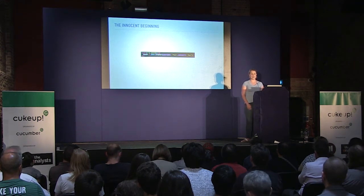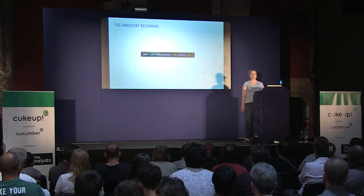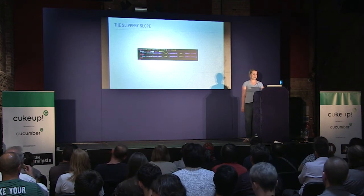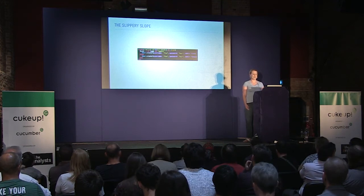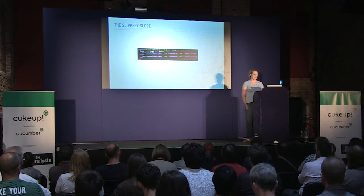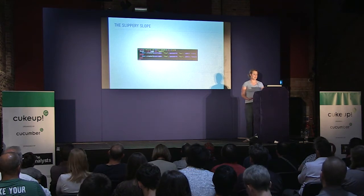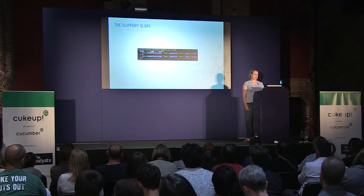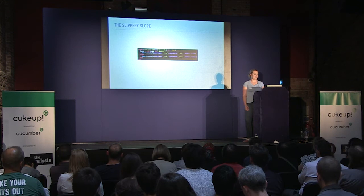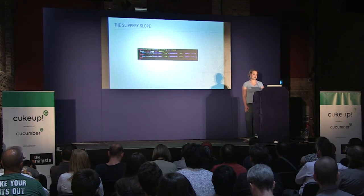I also want to address the issue of repetition in step definitions and how we can address that, especially since the functionality of calling steps from other step definitions is going to be deprecated in future versions of Cucumber. So the first scenario I want to look at is the issue of conditionals. You'll often start out with something innocent like this — a basic given step, given a user. We just assign a user to the user variable and create a user with a username and password. That's simple enough.